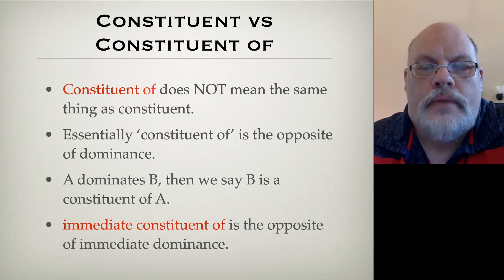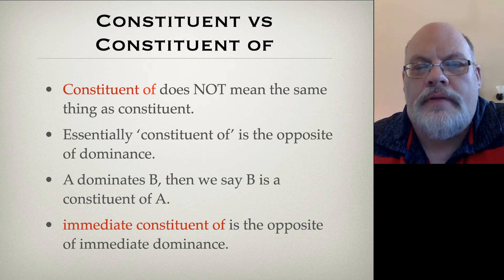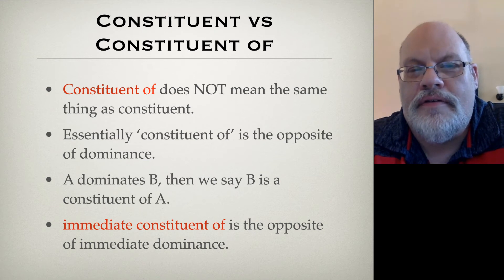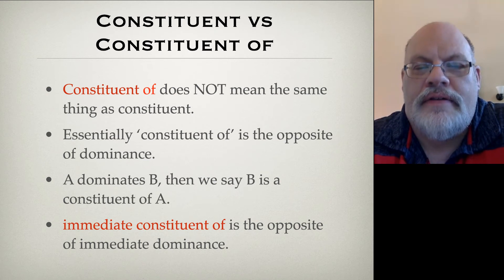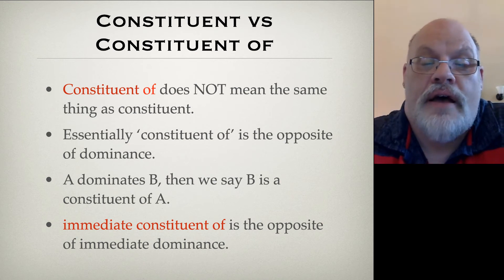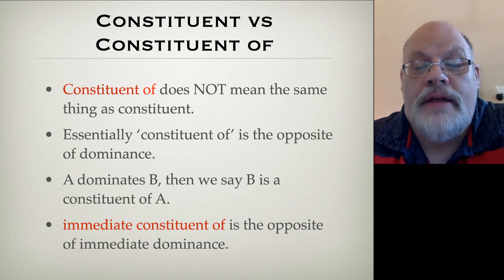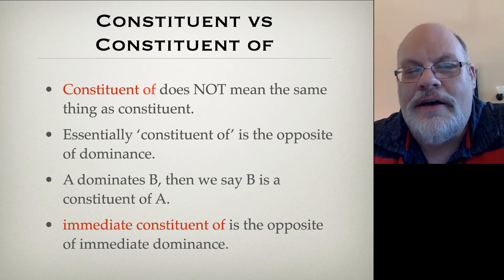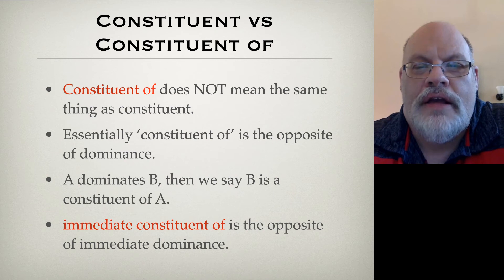Here's a little more terminology. 'Constituent of' is not the same thing as 'constituent.' A constituent is an exhaustive domination relationship. But when linguists talk about 'constituents of,' they mean the opposite of domination. So if A dominates B, then the reverse is that B is a constituent of A. Constituents are defined over exhaustive domination, and 'constituent of' is the opposite of domination.